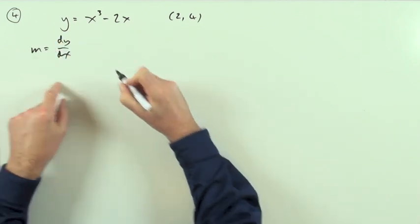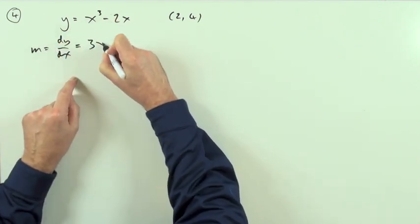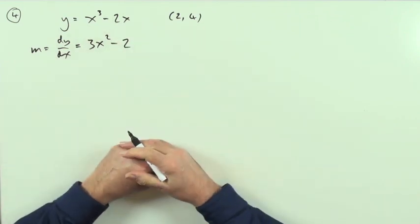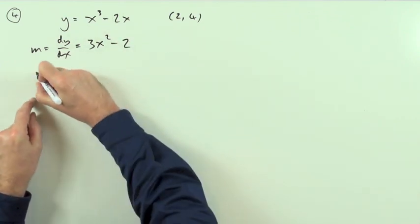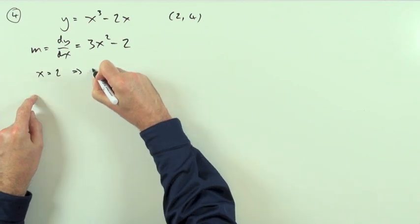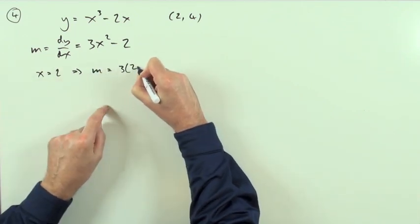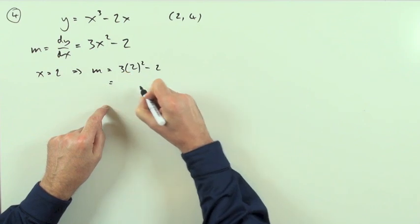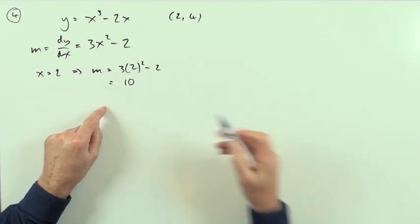That's simply multiply by the power, take 1 off the power. Linear terms, that's just -2. And what happens when x is 2? So if x is 2, that means the gradient is going to be 3 times 2 squared - 2. That's 3 times 4 is 12, take away 2 is 10.